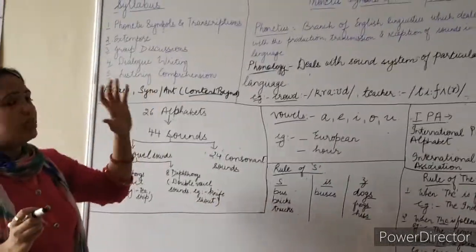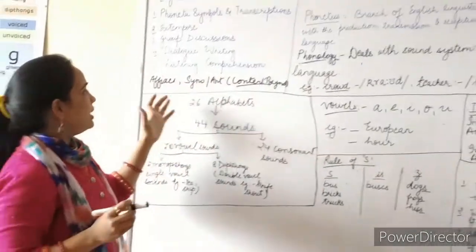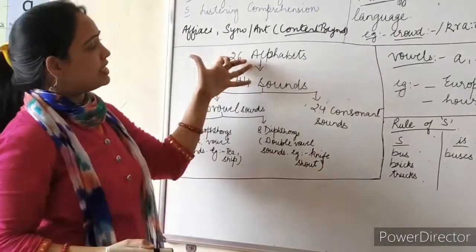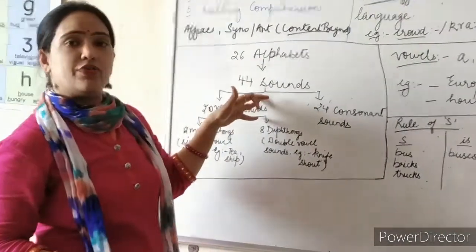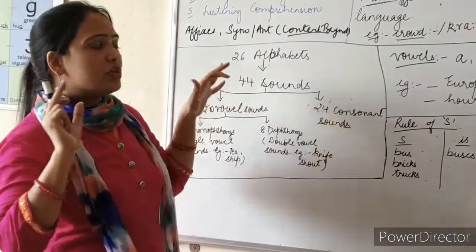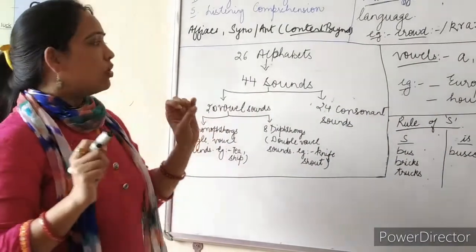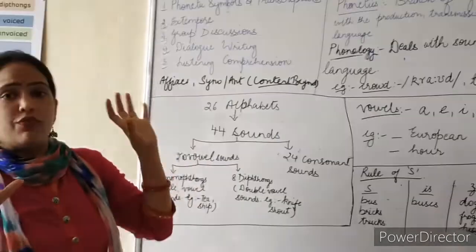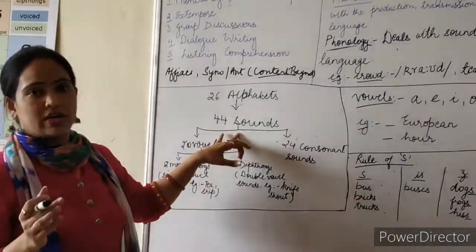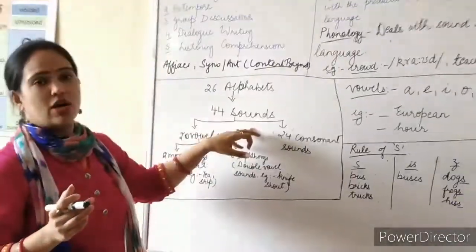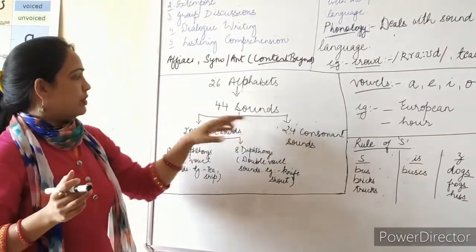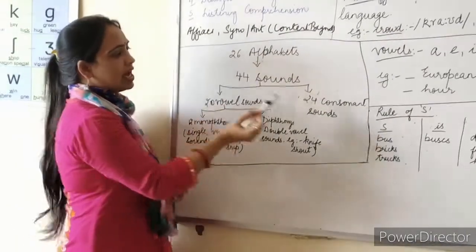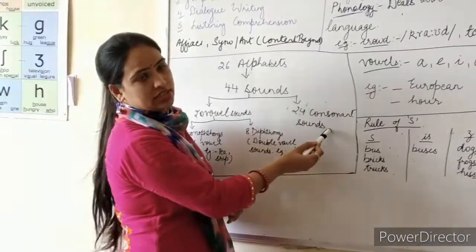When we talk about the English language, in English we have 26 alphabets, and these 26 alphabets are divided into 44 sounds. In phonetics, we majorly focus upon the sounds which are coming. We have 44 sounds in the language, and these 44 sounds are further sub-divided into 20 vowel sounds and 24 consonant sounds.